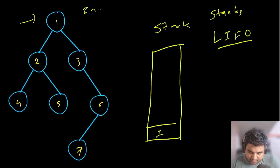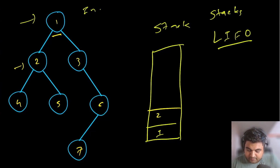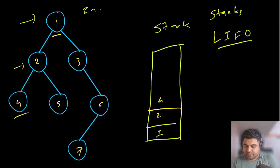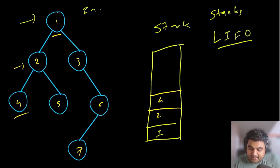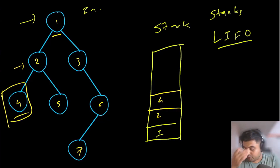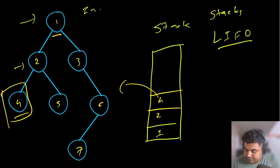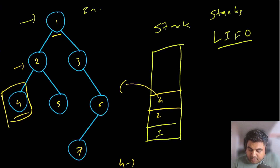So first we add node number one. After adding node one, we check if it has a left child — yes, node number two. For node two, does it have a left child? Yes, node number four. So we push node four onto the stack. For node four, does it have a left child? No — which means we process node four, so we pop node number four out. The first node we visit is node number four. After popping node four, node two no longer has an unhandled left child, so we add node two next.